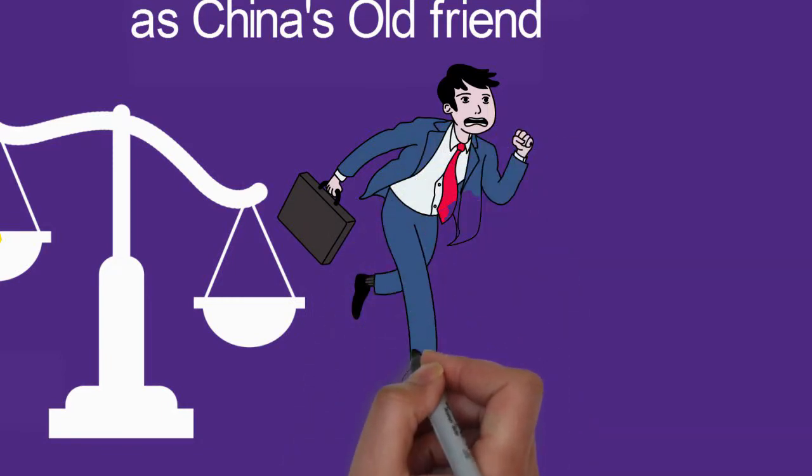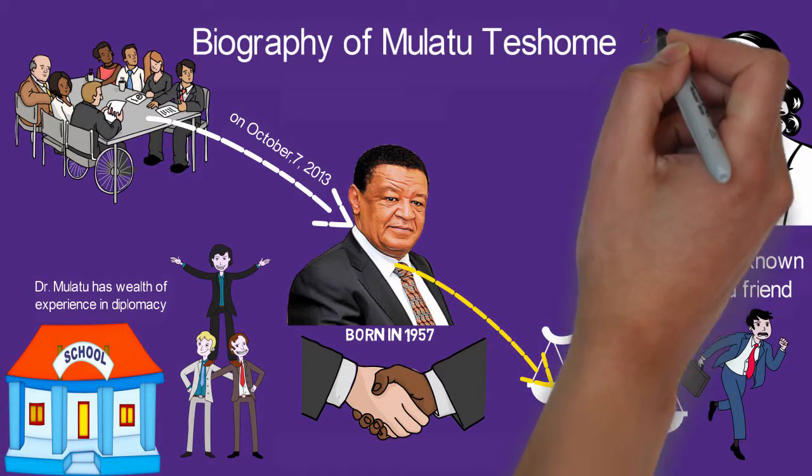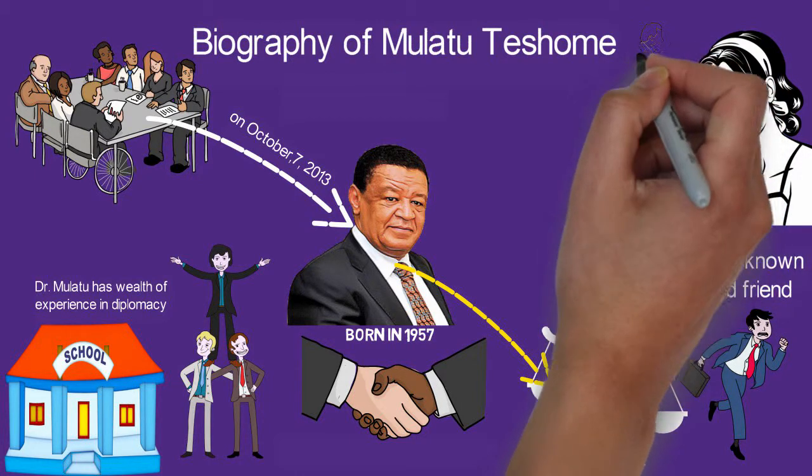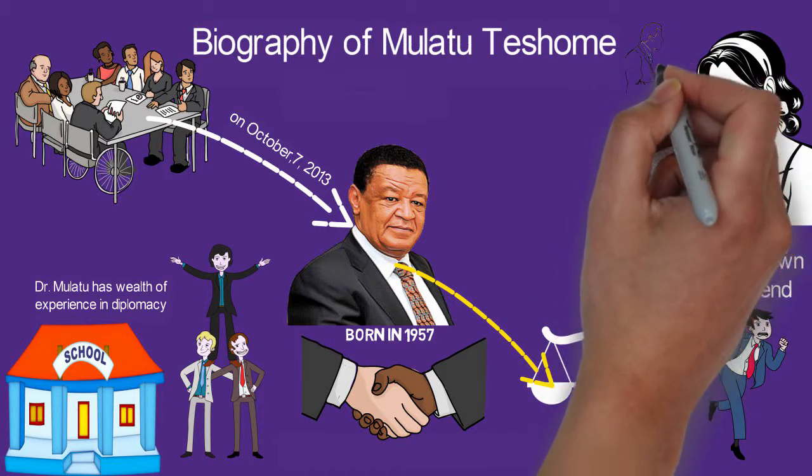Mulatu succeeded Girma Wolde Giorgis, who is also an Oromo. He came into office as a member of the Oromo People's Democratic Organization, which is one of the four parties of the ruling coalition Ethiopian People's Revolutionary Democratic Front.